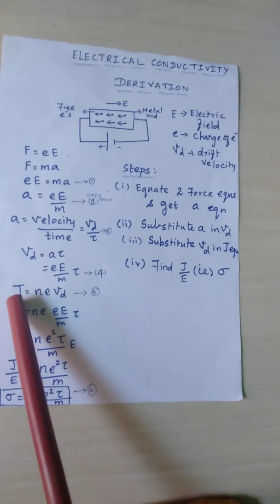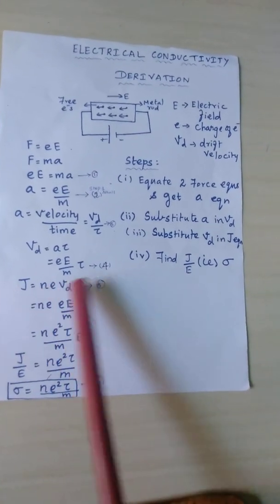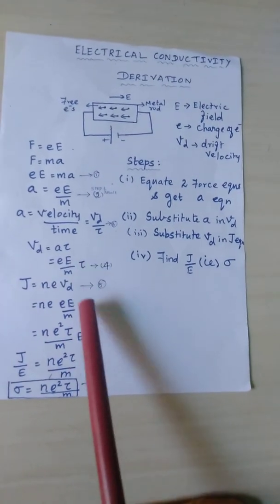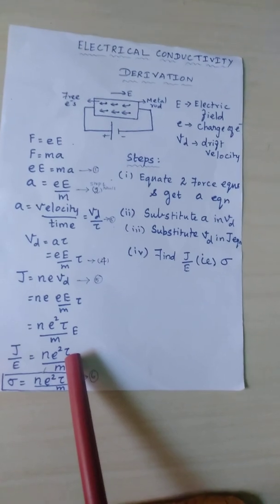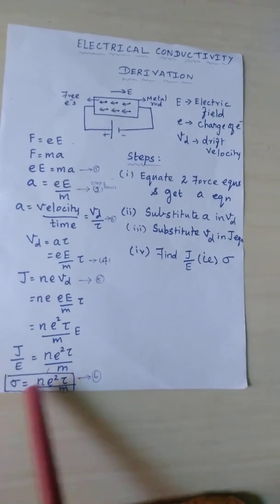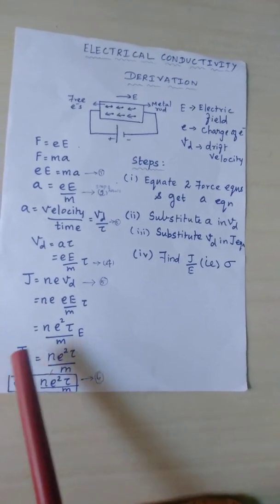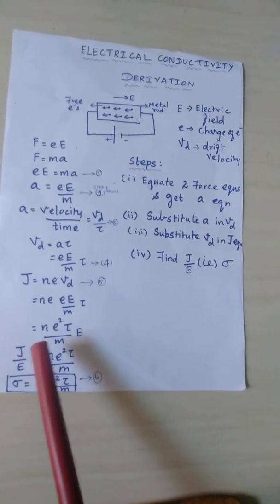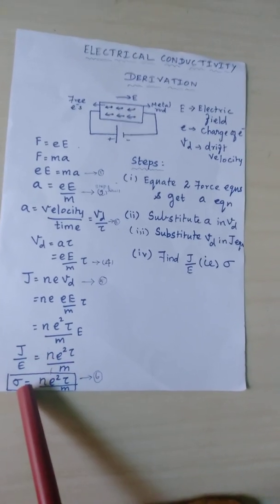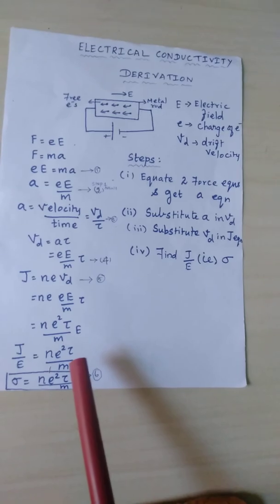The current density equation is J = neVd. Substituting the Vd value, we get J = ne²Eτ/m. From Ohm's law, the electrical conductivity σ = J/E, so σ = ne²τ/m.